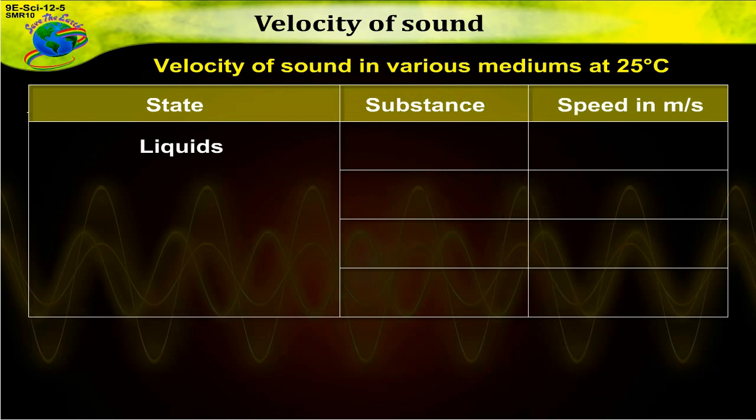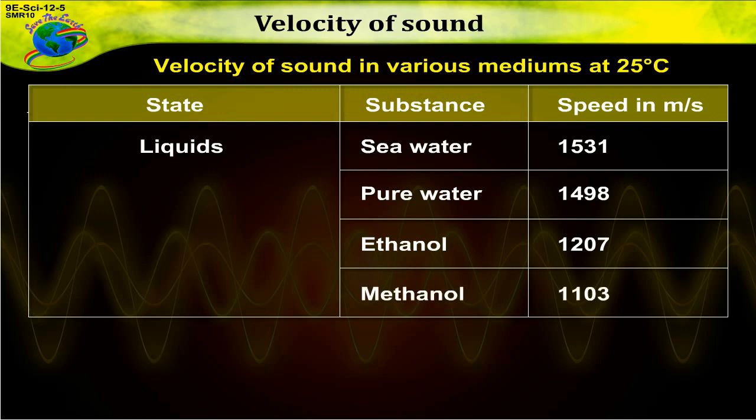Now let's see the liquid substances. Seawater, speed is 1531 meters per second. Pure water, 1498. Ethanol, 1207. Methanol, 1103.